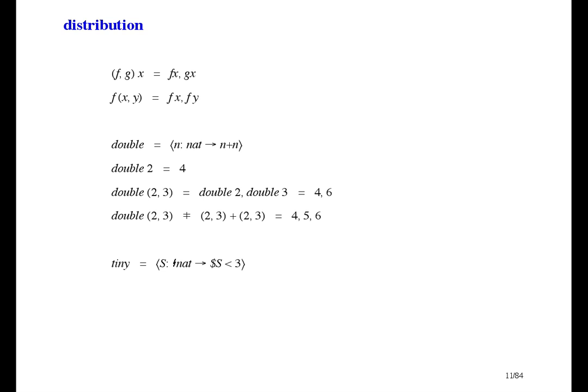For example, here's a function called tiny that introduces a set-valued variable and returns a binary that tells whether its size is less than 3. If we apply it to the null set, we get true. If we apply it to this set, we get false.